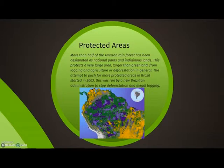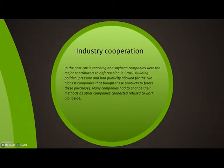In the image, the orange represents deforested areas, while the green, blue, and purple represent the protected areas. Industry cooperation: in the past, cattle ranching and soybean companies were the major contributors to deforestation in Brazil. Building political pressure and bad publicity caused the two biggest companies that bought these products to freeze their purchases, and many companies had to change their methods.